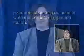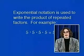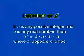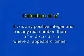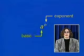Now we move to exponential notation, which is used to write the product of repeated factors. For example, five times five times five times five can be written as five to the fourth power. By definition, if n is any positive integer and a is any real number, then a to the n equals the product of a multiplied n times. In the expression a to the n, n is called the exponent and a is called the base.